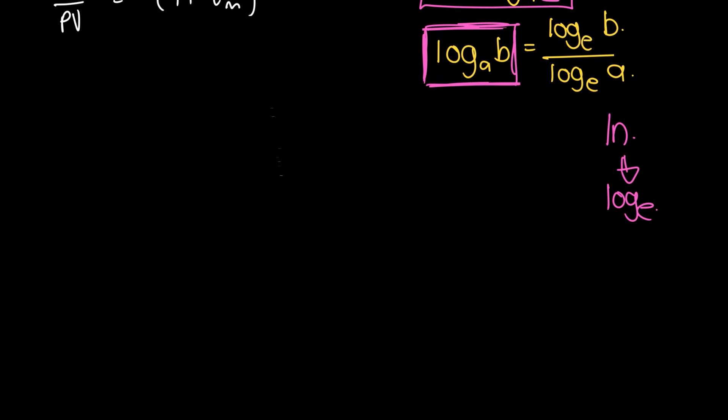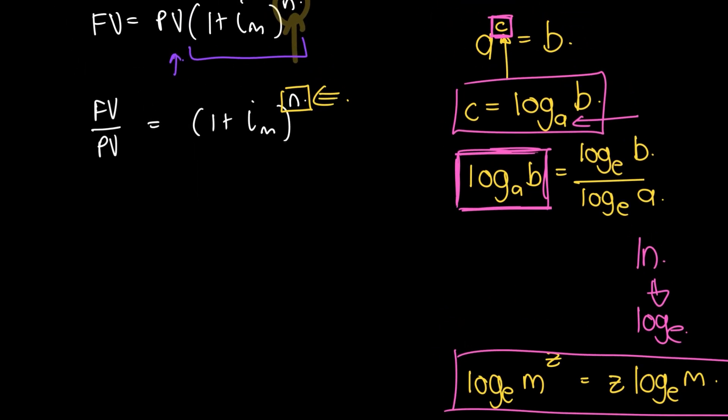There is one other aspect of the log rules that we utilize. That is essentially saying that if you have log base e of something to the power of something, it can be rewritten as the power times log e. This one is the one we're basically going to use. We want to get the n to come down. We are going to take the natural log on both sides.